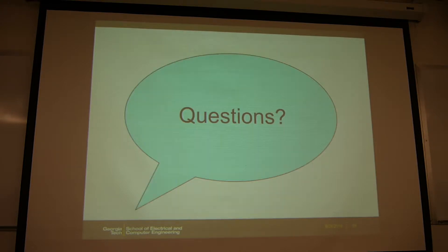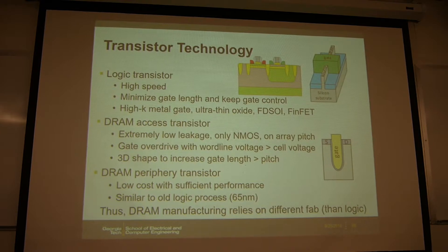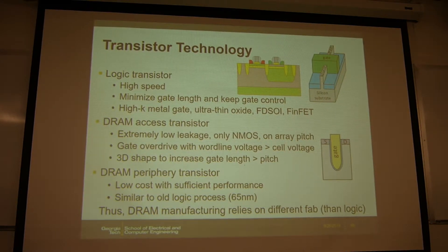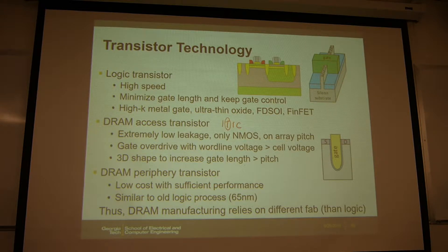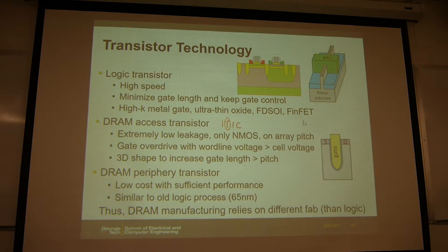Now we switch to transistor technology. For DRAM technology, if you compare the DRAM access transistor — which is the 1T1C — it is very different from the logic transistor used, for example, in SRAMs. They have very different targets: for the logic transistor, we need high speed and high density. The DRAM access transistor target is low leakage, and you only need NMOS for 1T1C. So low leakage is a key feature.